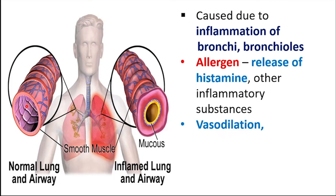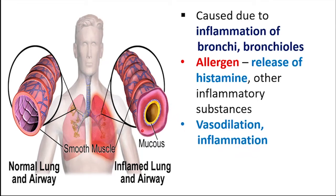Observe the diagram. This is a normal bronchus, a respiratory tube. Due to the effect of histamine, the blood vessels dilate and redness in the region increases — this is called vasodilation. The other effect of histamine is inflammation, which causes swelling of the tissues in the wall of the bronchus, making the lumen narrow. This results in the constriction of bronchi.